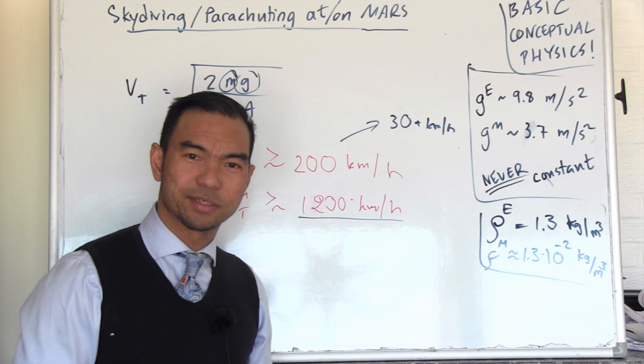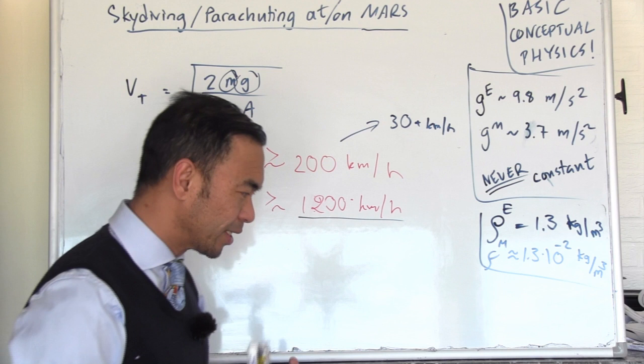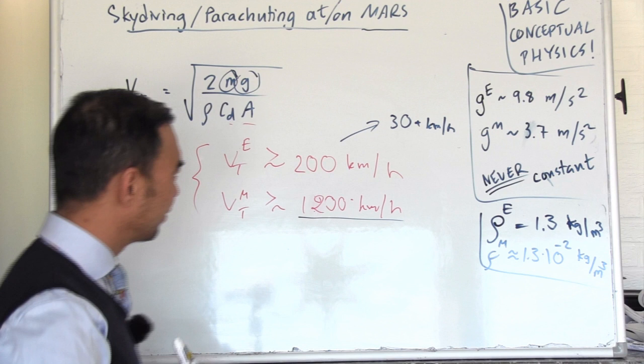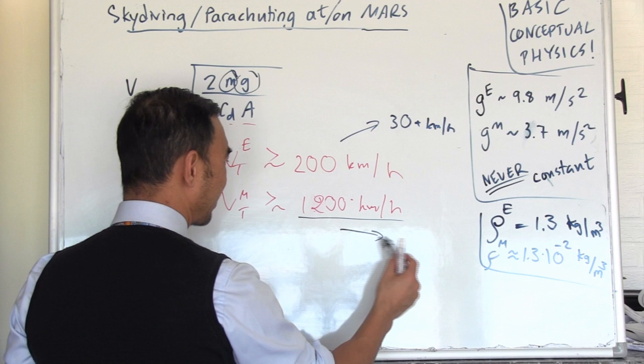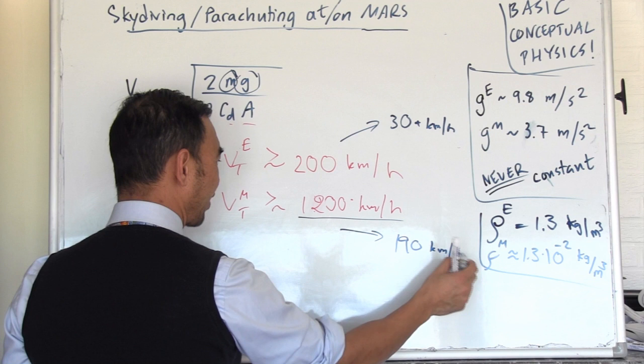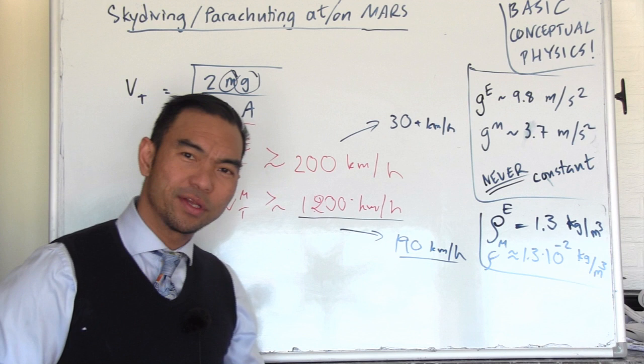There's no chance that you can slow that down enough. Once we open a parachute on Earth, we slow down to about 30 plus kilometers an hour. With ram and rectangular parachutes that we all jump with, you can brake and flare, so the landing will be quite soft. On Mars, there's no chance.